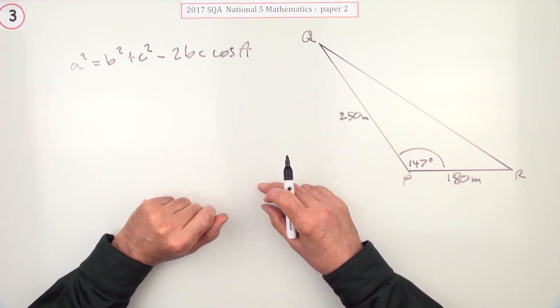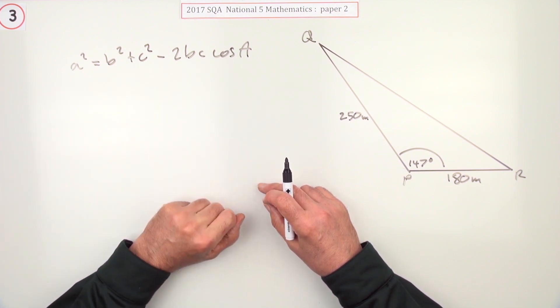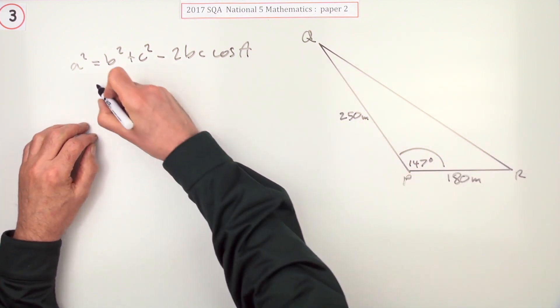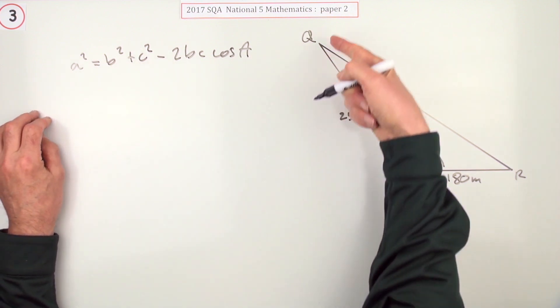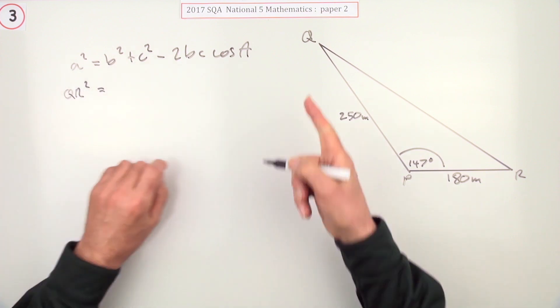But there's actually no need to do that because it's a configurational formula. You've got the angle and the other two sides, two sides and the included angle, you could just leap straight in with it. I'm just going to call that QR, so QR squared because it is called QR.